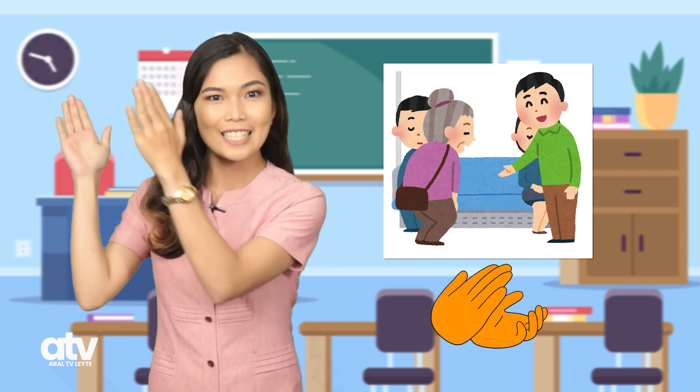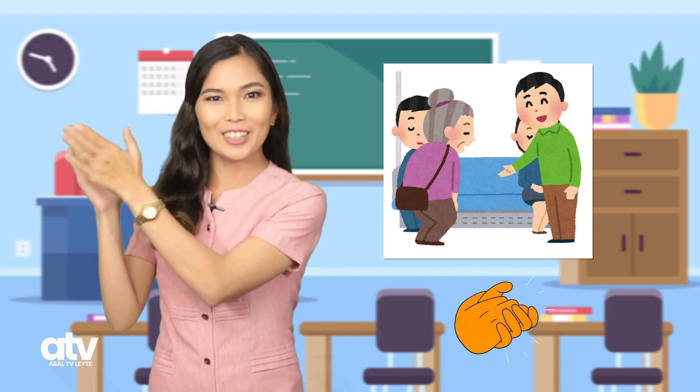Ang larawang ito ay nagpapakita ng isang lalaki na pinaupo ang matanda sa kanyang pinagkakaupuan sa loob ng bus. Sa tingin nyo mga bata, ito ba ay nagpapakita ng pagpapaubaya ng pansariling kapakanan para sa kabutihan ng kapwa? Tama! Magbigay tayo ng tatlong palakpak. Isa, dalawa, tatlo.